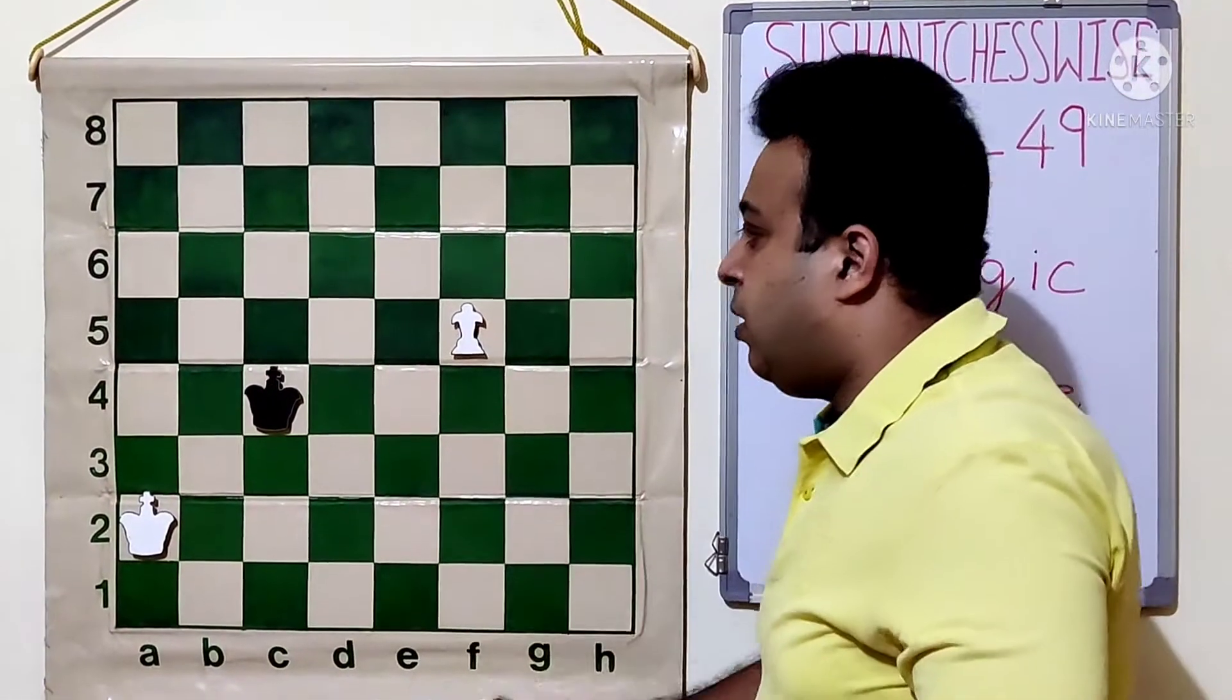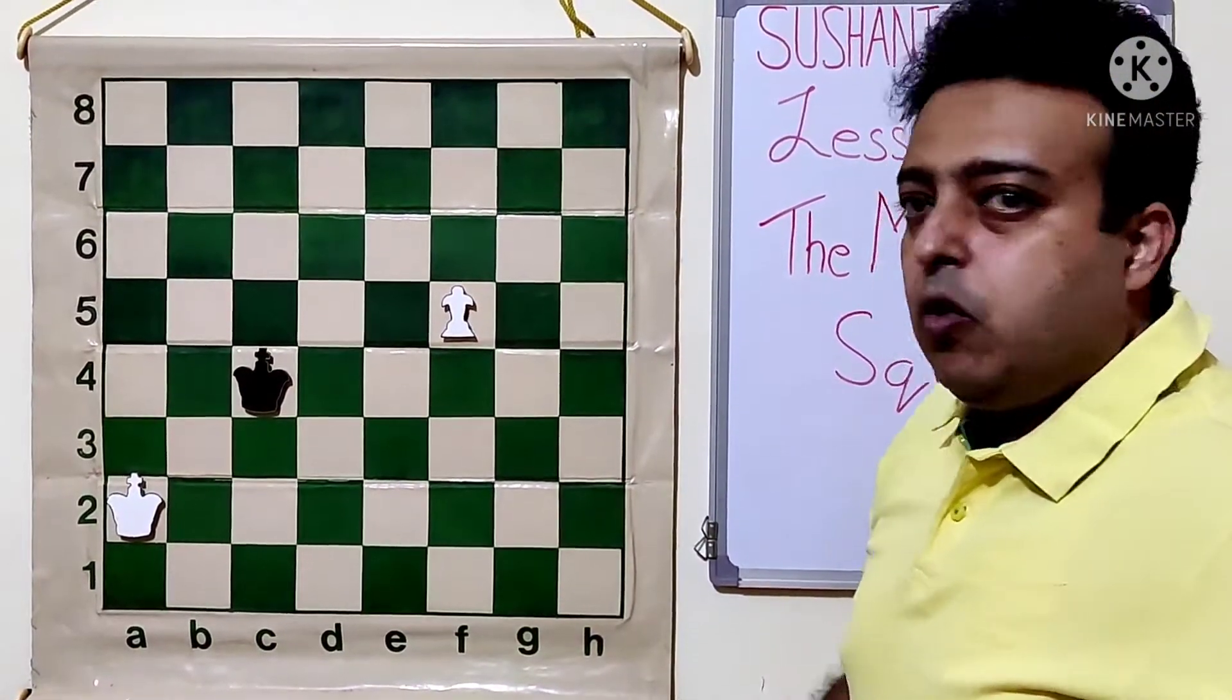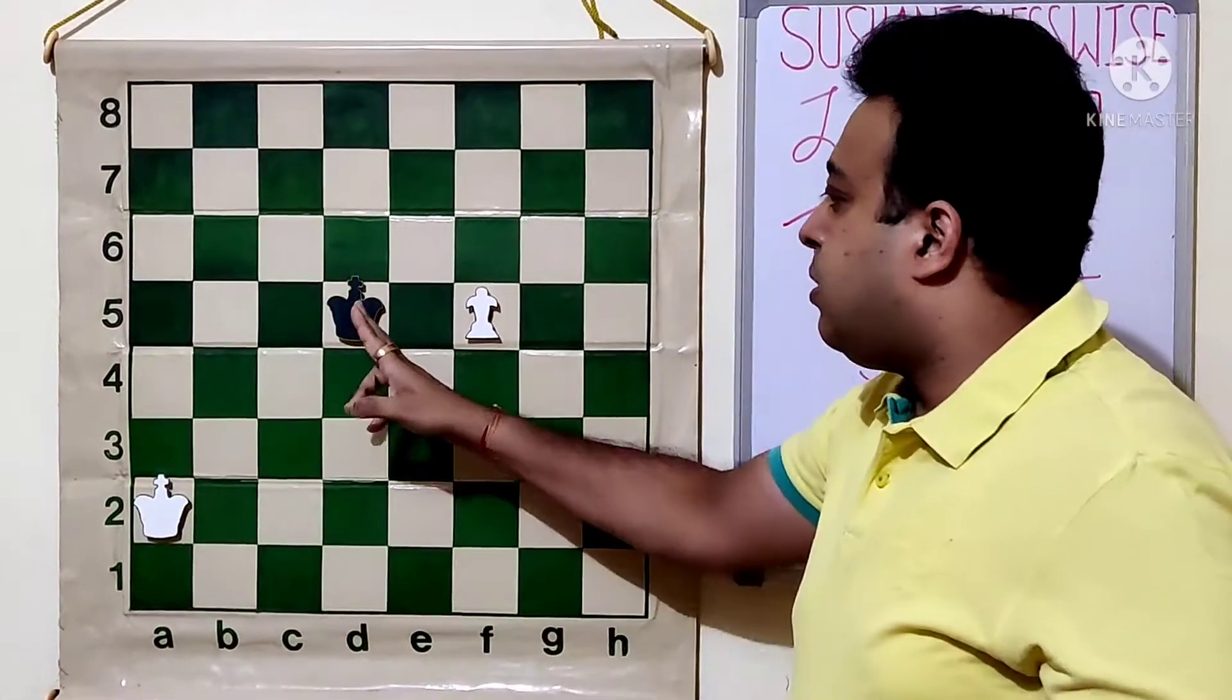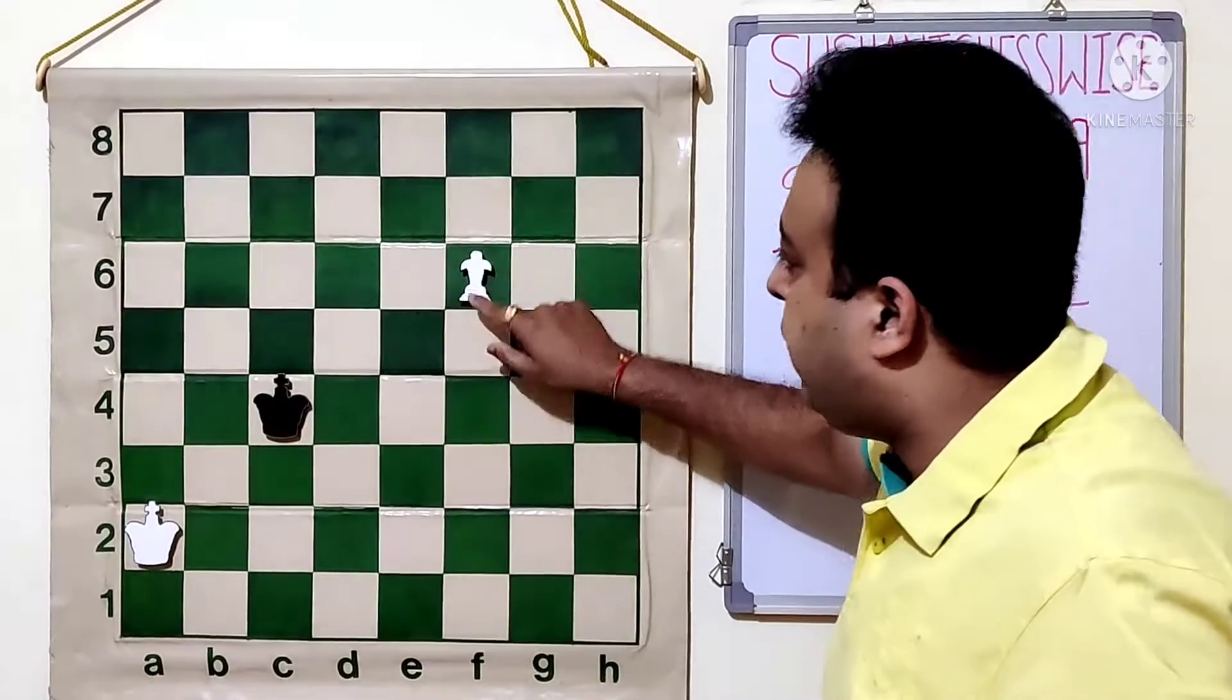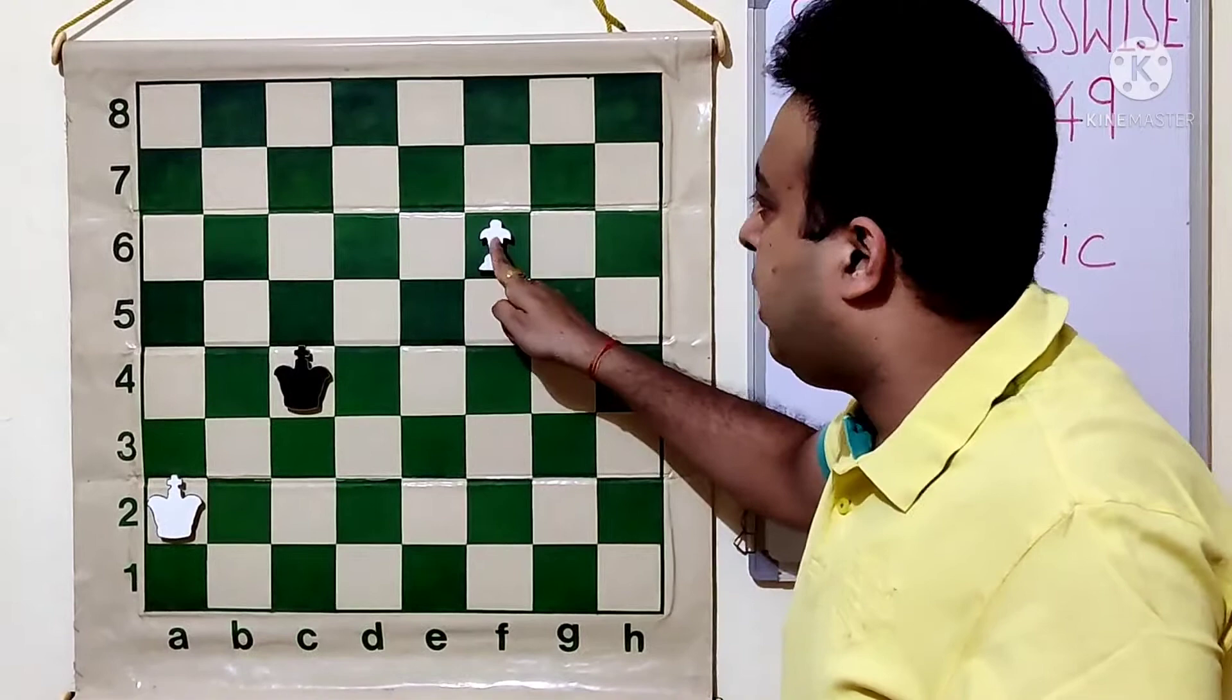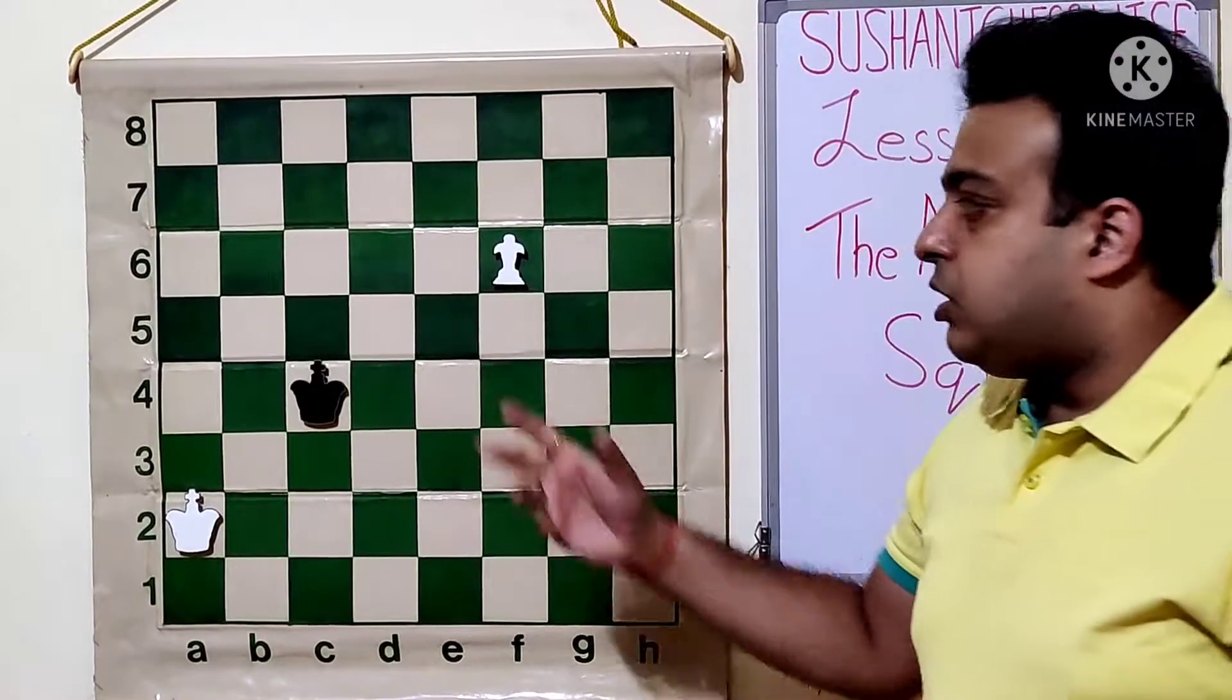So we have got a square here. The square we will first identify and then we will check whether the black king can enter the square. So let's say this is black to play. The moment the king comes to C5 or D5, we see that the black king has entered the square and we ensure that the king will be able to stop the pawn. Same way if it is white's move, white will play F6 and now we will note that the square has become smaller. The king is unable to come into the square. So the pawn will prevail. The pawn will queen.